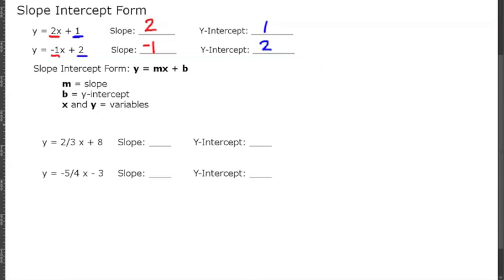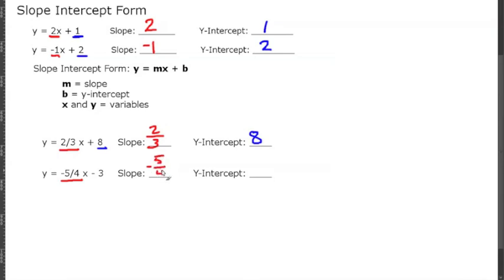Below are a few examples where we're going to find the slope and the intercept again. Remember, slope is always multiplied with the x. So in this first problem, 2 thirds is our slope, and 8 would be our y-intercept. In the bottom problem, negative 5 fourths will be our slope, and you can see that 3 is the intercept.